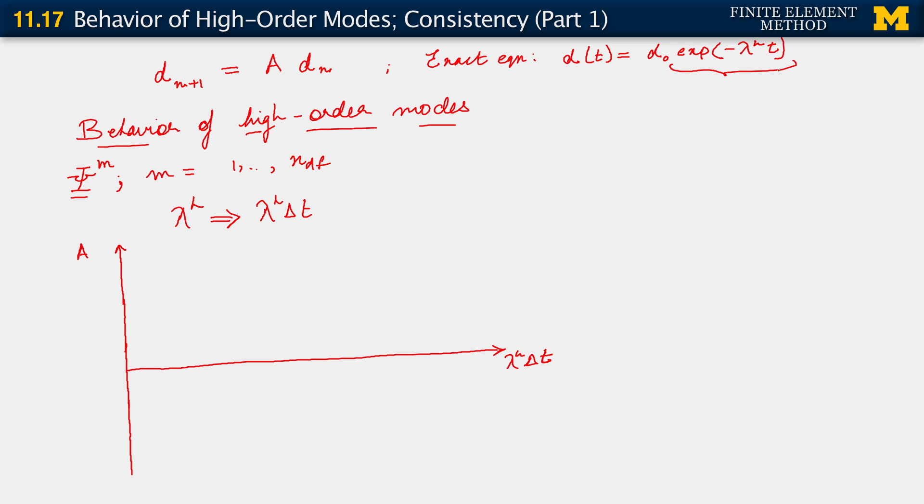We could just look at this quantity as being the amplification factor. And then if we apply it again to the idea that we want to look at how it varies between one time step and the other, from t n to t n plus 1, what you will see is that the amplification factor for the exact problem is essentially exponent of minus lambda h delta t.